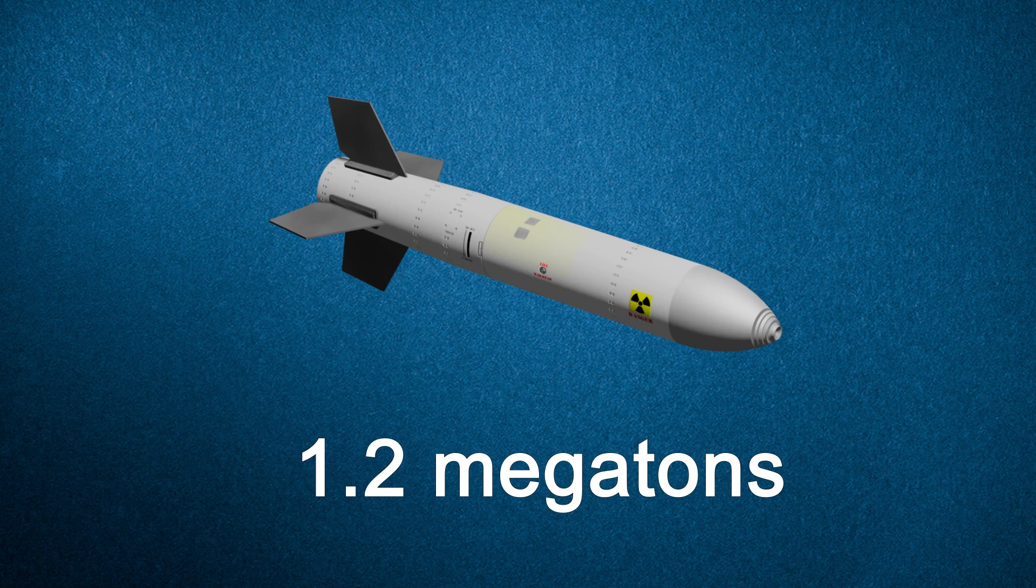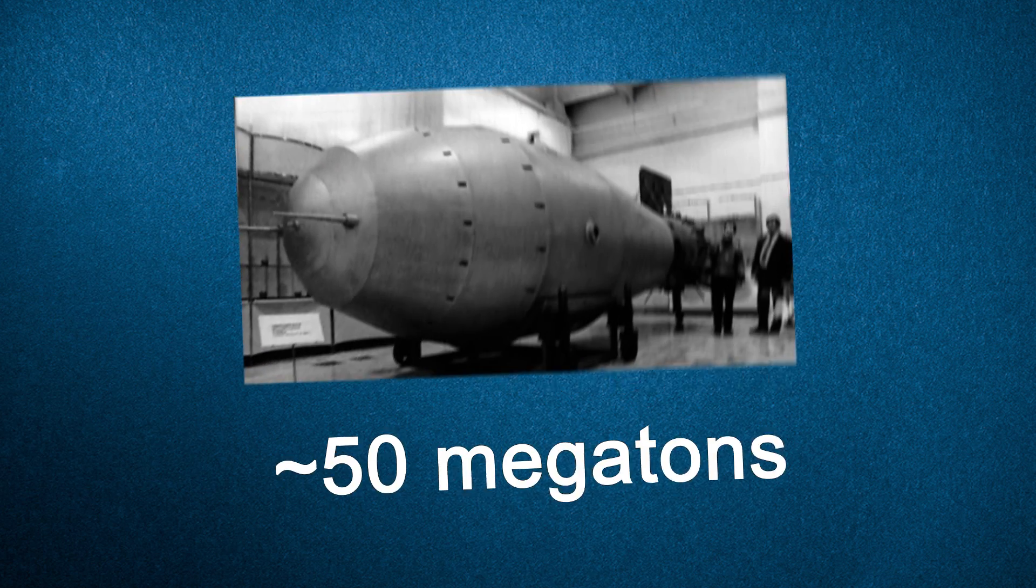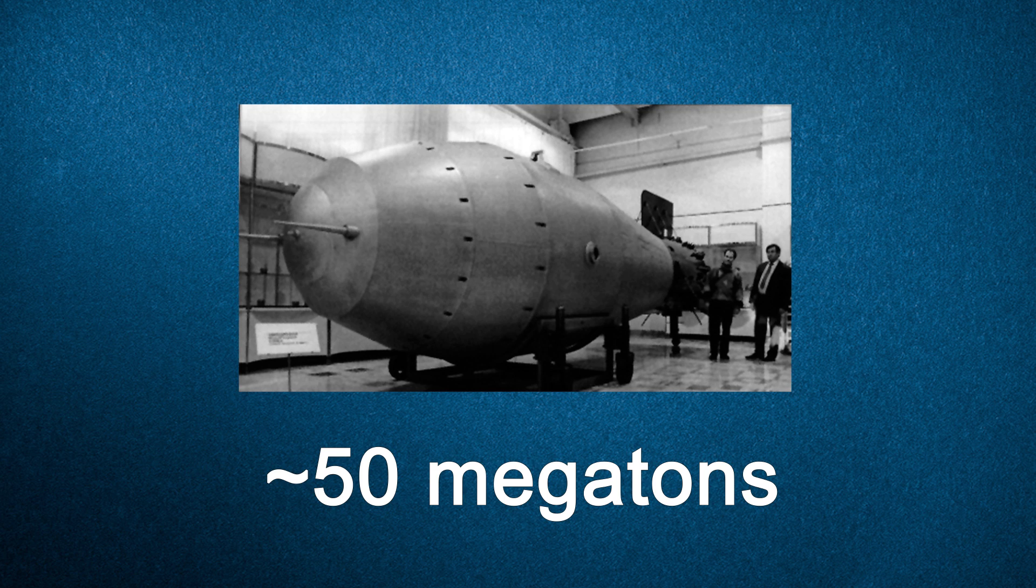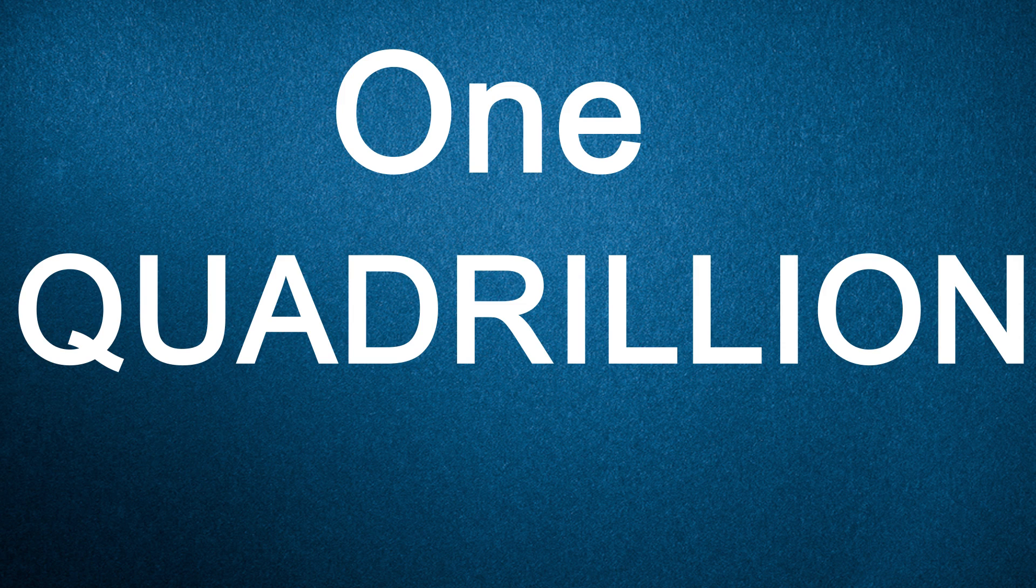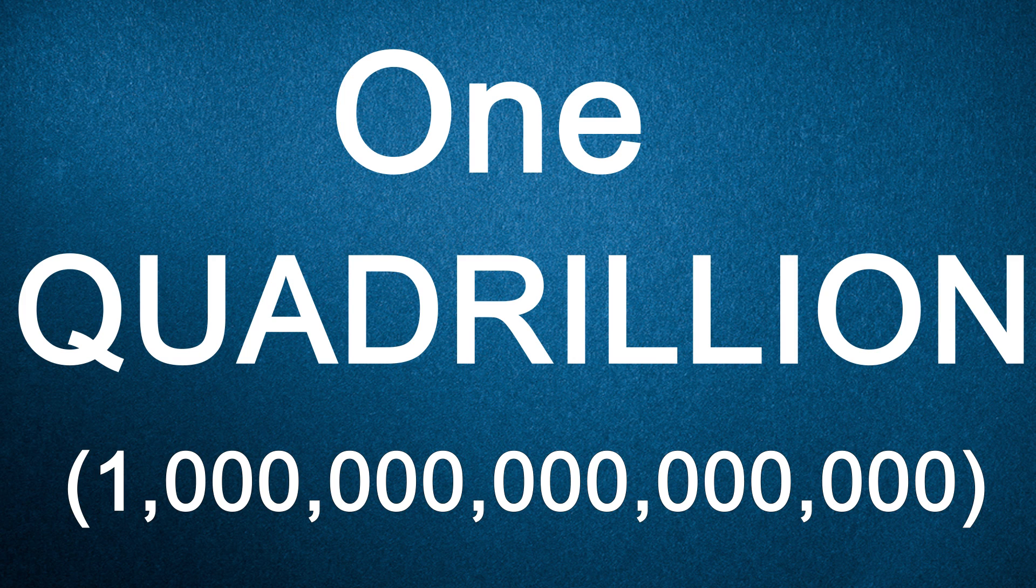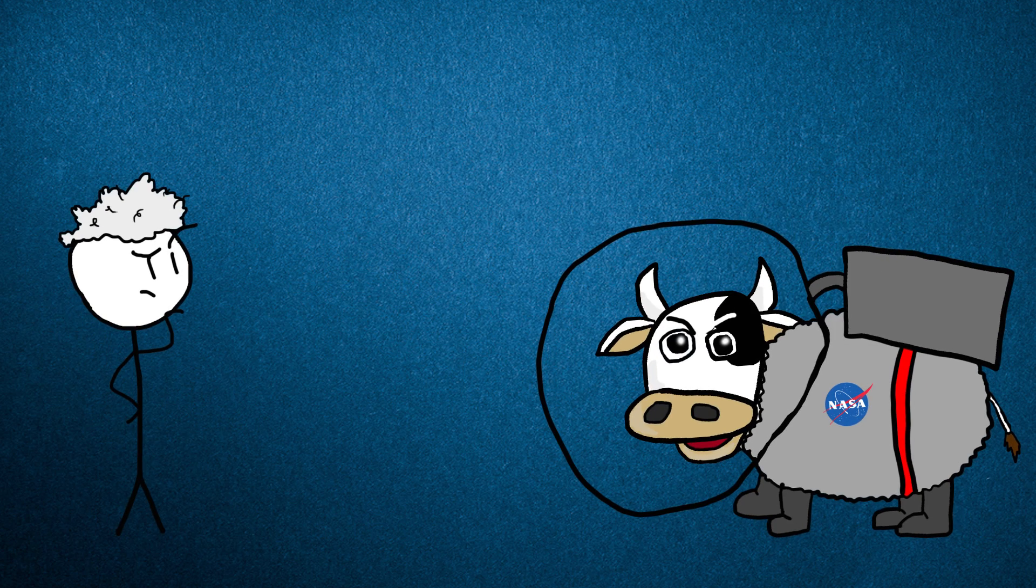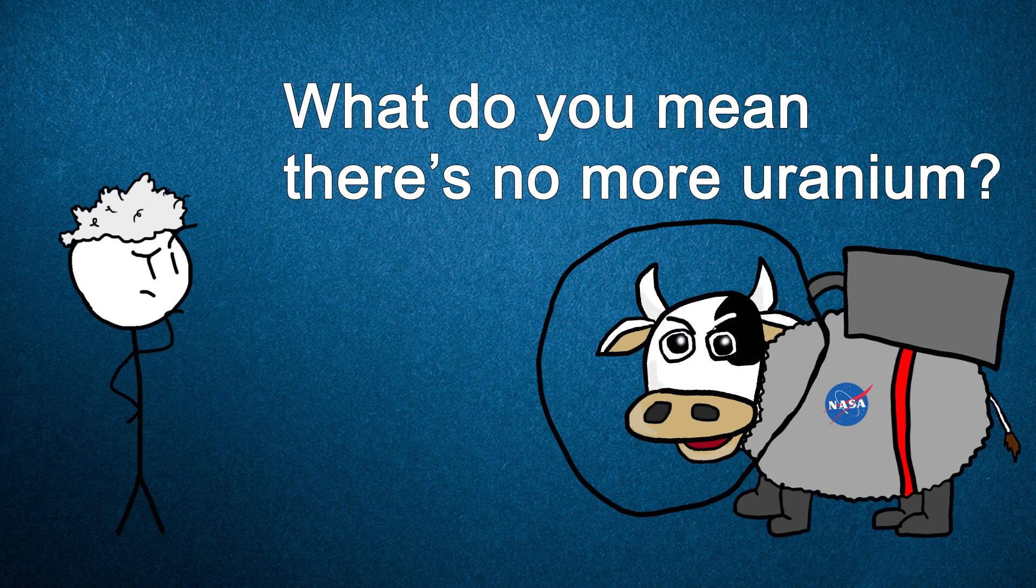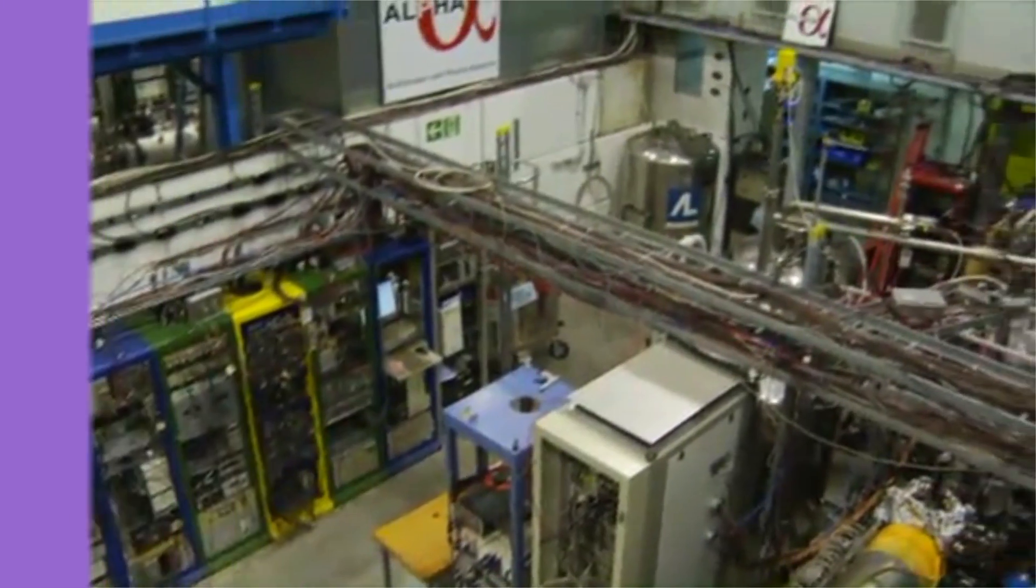If we replaced each currently available nuclear warhead with the Tsar Bomba, the largest nuclear device ever detonated, we would need over 1 quadrillion bombs. As you might have guessed, making that many nuclear weapons is simply beyond the reach of our current technology. Not to mention the fact that we would likely run out of materials before we got anywhere close to 1 quadrillion bombs. Okay, so nukes are out.